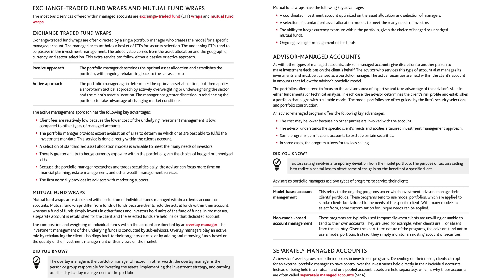ETF wraps are often directed by a single portfolio manager who creates the model for a specific managed account. The managed account holds a basket of ETFs for security selection. The underlying ETFs tend to be passive in the investment management. The added value comes from the asset allocation and the geographic, currency, and sector selection. This extra service can follow either a passive or active approach. The passive approach: the portfolio manager determines the optimal asset allocation and establishes the portfolio with ongoing rebalancing back to the set asset mix. The active approach: the portfolio manager determines the optimal asset allocation but then applies a short-term tactical approach by actively overweighting or underweighting sectors, with greater discretion in rebalancing to take advantage of changing market conditions.